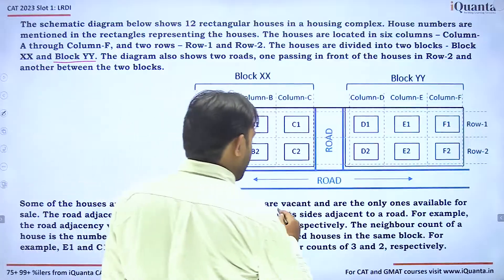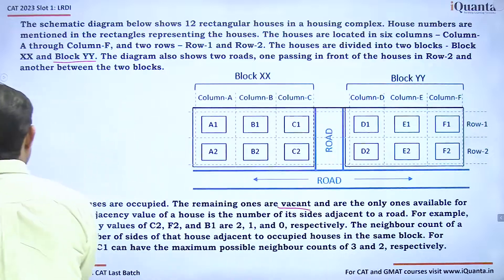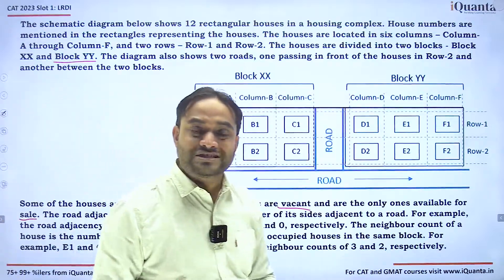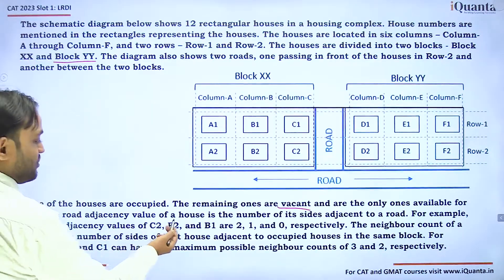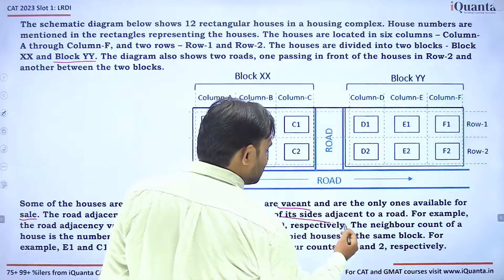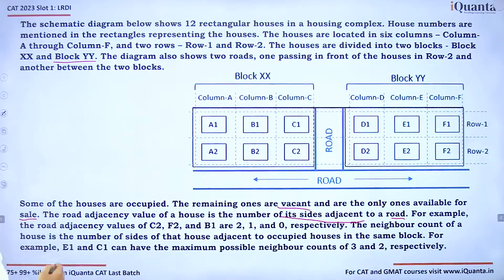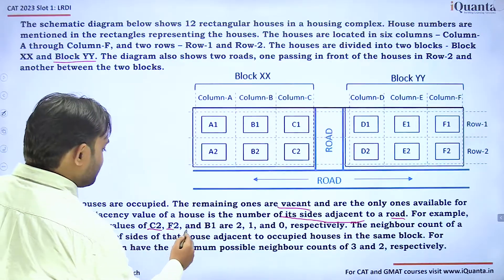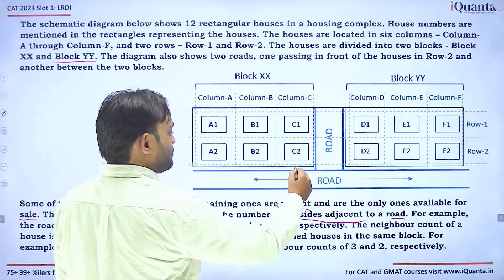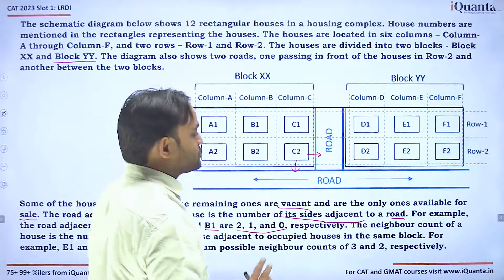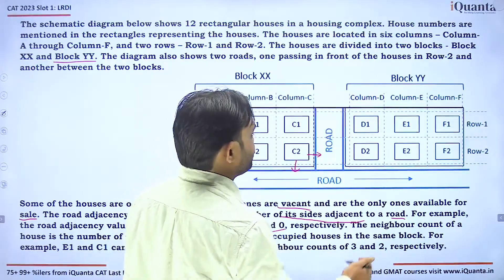Some of the houses are occupied and the remaining ones are vacant. The vacant ones are the only ones available for sale, not the occupied ones. The road adjacency value of a house is the number of its sides adjacent to a road. For example, the road adjacency values of C2, F2, and B1 are 2, 1, and 0 respectively. C2 is adjacent to two roads, so its road adjacency value is 2.